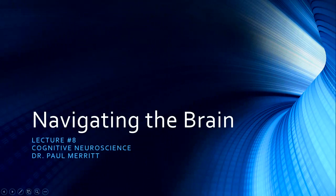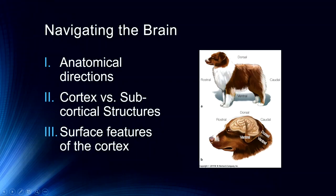Hello and welcome to lecture number eight. Today in this cognitive neuroscience lecture, we'll be talking about navigating the brain — in particular, how we locate and discuss different areas of the brain. We'll start with anatomical directions, then talk about cortical versus subcortical structures, and then look at some surface features of the cortex, which become important in our next lecture.